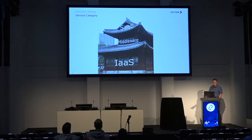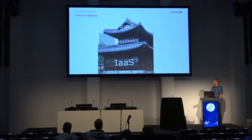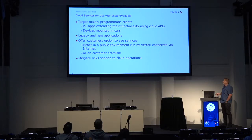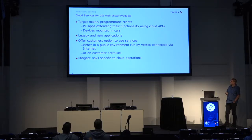The Vector cloud belongs to the SaaS category of cloud services. That is, we provide software to our customers — we don't provide virtual machines or networks. From the customer or end user perspective, it all looks like software, presented with the help of middleware itself running on an infrastructure-as-a-service platform. Our cloud services are dedicated to be used with Vector products, so you won't find a sign-up page — you get access by purchasing a cloud-enabled product. It targets mainly programmatic clients, meaning in most cases not a web browser but an application emitting HTTP requests in its back-end. These clients can be PC applications extending their functionality or devices mounted in cars.